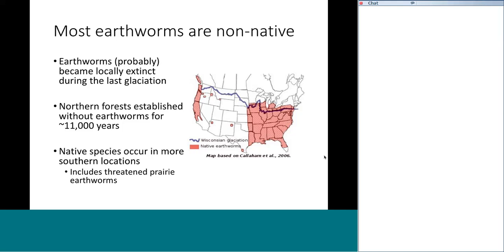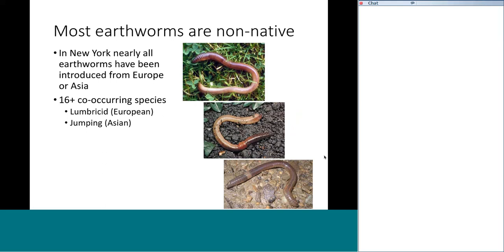Not all earthworms are created equal. Many native earthworms, shown in pink on the range map, really grow to much lower abundances, including some threatened prairie earthworms. When you're going out for your IMAP challenge, almost certainly every single earthworm you'll see will have been introduced from Europe or Asia. It can be tricky to identify them because we have 16 or more co-occurring species — longer-standing European invasive earthworms and then the newer wave of invasion from jumping worms.